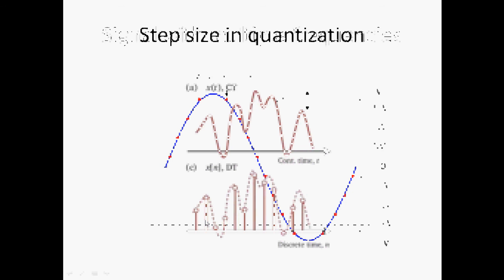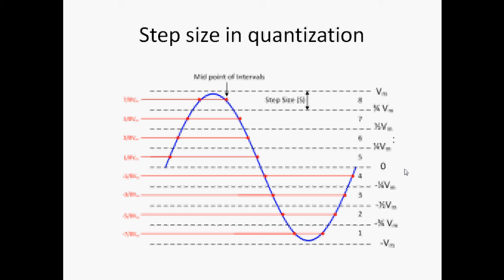We have seen the analog to digital converter ADC. In the ADC we have seen the quantization. A step of quantization is a minimum voltage which can be represented by the signal. Now further discussion we will carry out in next sessions. Thank you.